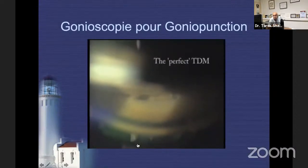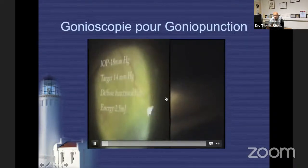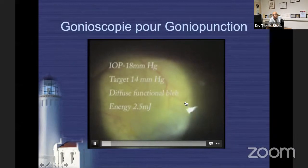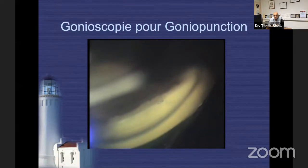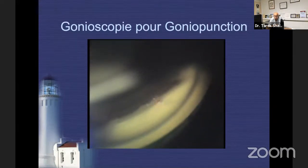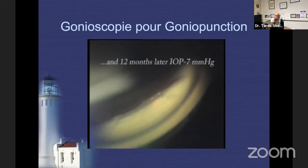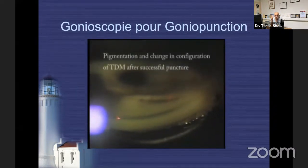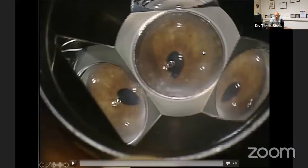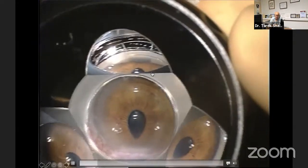For those doing deep sclerectomy, we leave behind a trabecular-Descemet's membrane window. If pressure becomes high, you can gonioscopically perform a goniopuncture — as easy as a capsulotomy. But don't be trigger-happy: if you perforate too aggressively, you can demolish the trabecular-Descemet's membrane and cause iris to herniate into the intrascleral dissection space.